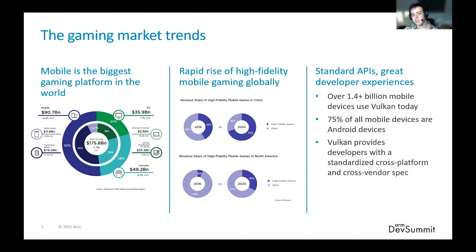Over 1.4 billion devices currently support Vulkan, a cross-vendor and cross-platform graphics API. It provides developers with a standardized specification which unifies the ecosystem, and provides developers with a clear path to achieving ray tracing in their applications and on their devices.